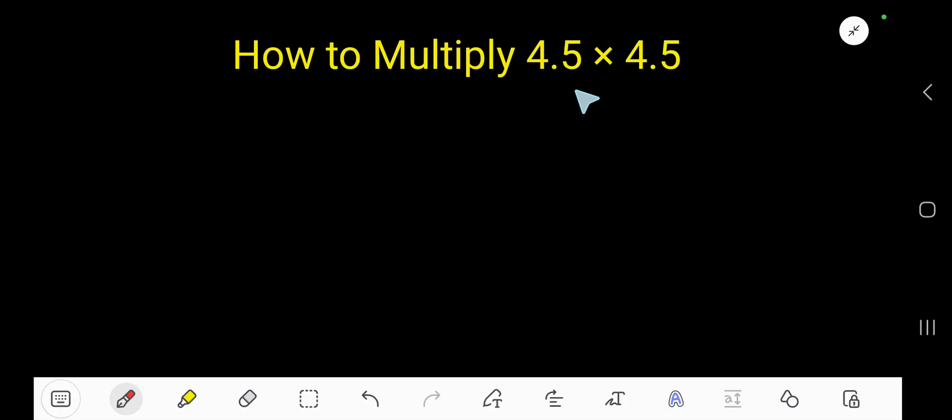How to multiply 4.5 times 4.5. Right here, 4.5 then 4.5. Remember, imagine that there is no decimal now.